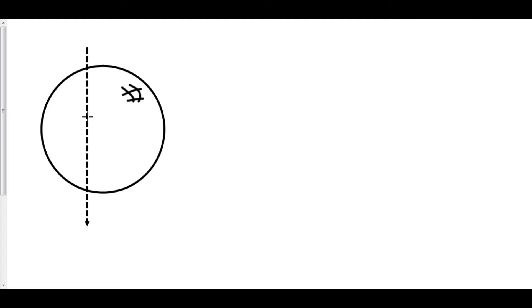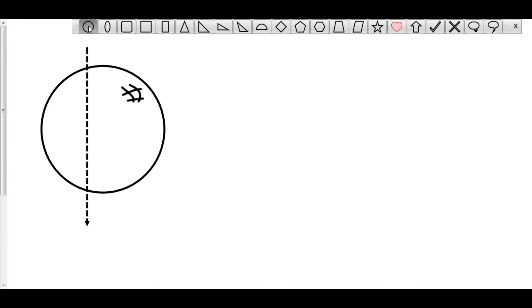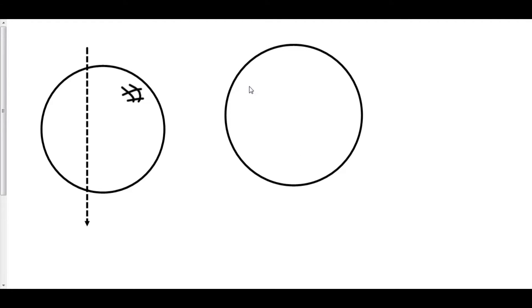Now, imagine we're cutting out an infinitely small sliver of this sphere. If you were to cut out a sliver at this particular junction of the sphere, what would it look like? Well, if you open it up, it would look like a circle.